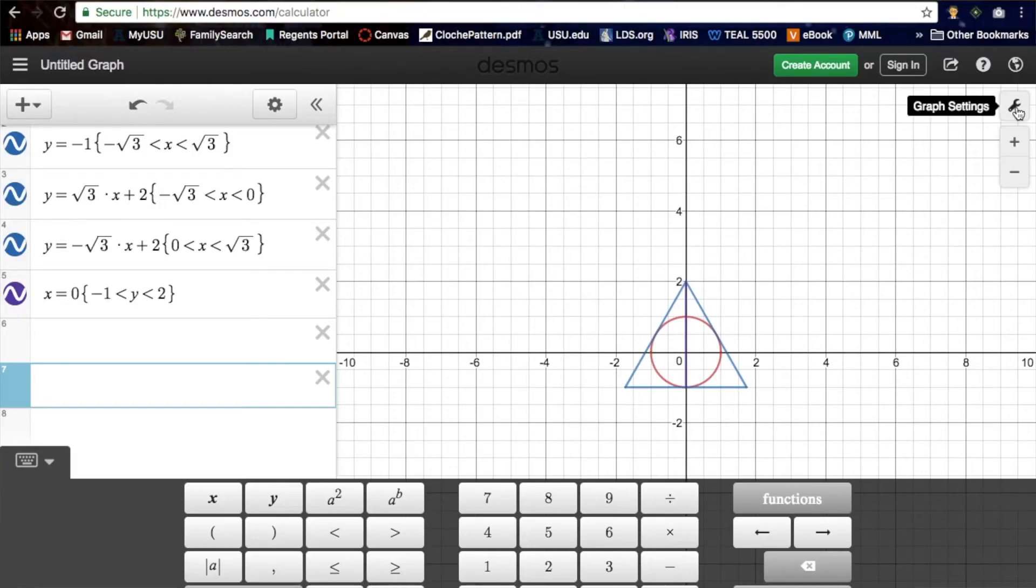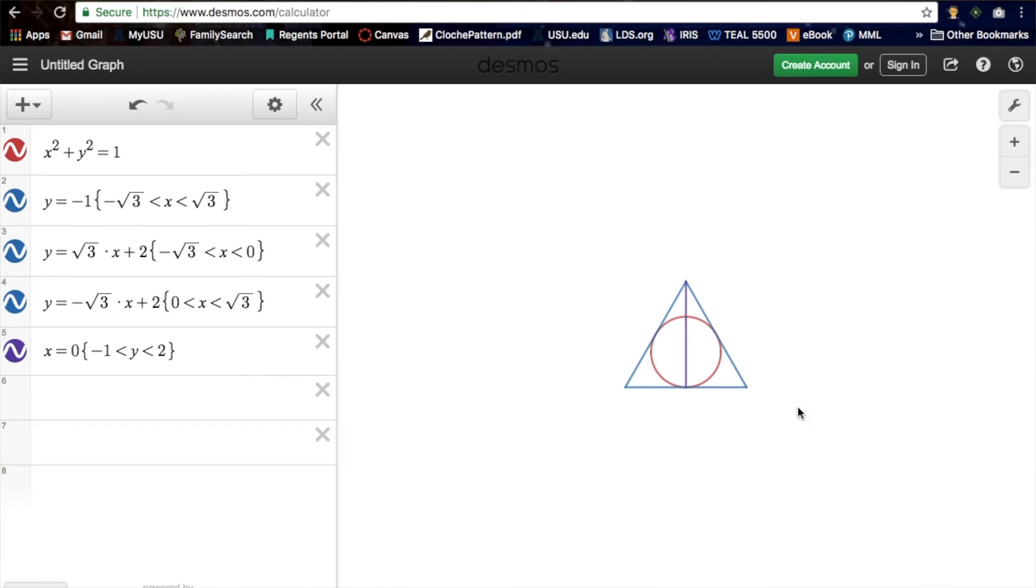So there you have it, the Deathly Hallows symbol graphed. And on Desmos, you can change up the colors and get rid of the grid or the axes, so you can just bask in the beauty of the Deathly Hallows symbol that you just graphed. Thank you for watching this video. If you enjoyed it, be sure to give it a thumbs up. Also, if you like educational videos like this, you can check out my playlist of all my educational videos right here. And you can also check out one of my most recent educational videos up here. And don't forget to subscribe to my channel, which you can do right here. Thanks for watching. See you next Saturday.